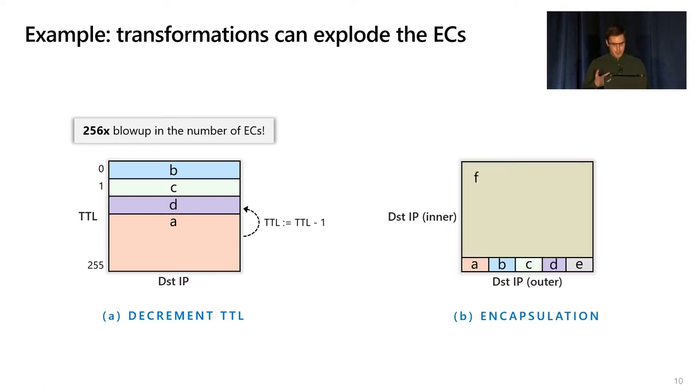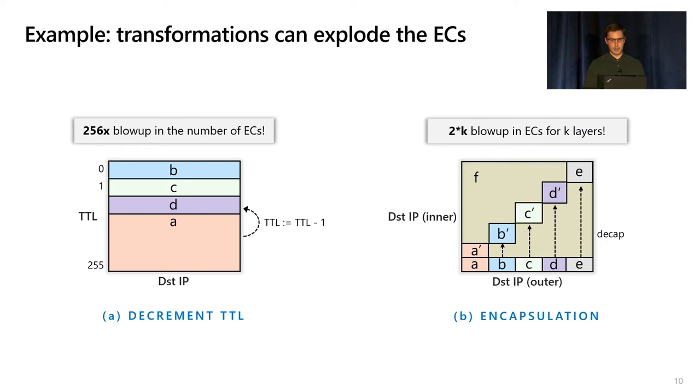Going back to layering, this problem is only compounded when you have multiple headers. For example, suppose you wanted to model just a simple packet encapsulation for two IP headers where you just copy the top header when you encapsulate the packet. The problem here is that in the worst case, you can get a doubling of the number of equivalence classes for a single extra layer, and in general for K layers, you can get 2^K blow up in the number of equivalence classes. These types of transformations can increase multiplicatively as well.